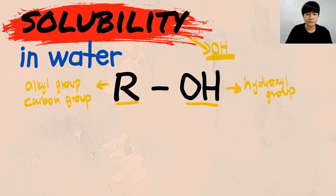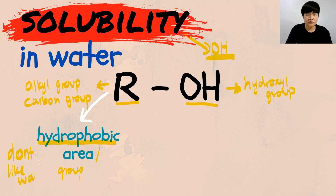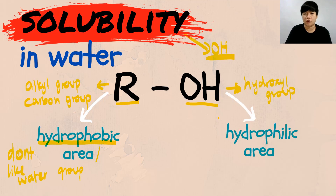The first new term I want you to pick up is the word hydrophobic. Your alkyl group or your carbon group will create a hydrophobic area. Hydrophobic means you don't like water — your R group is a group that doesn't love water. For your OH group, that is what we call hydrophilic. Hydrophilic means water-loving group.